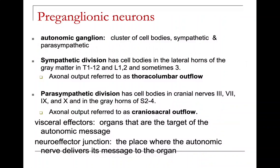Autonomic ganglia are clusters of cell bodies — both sympathetic and parasympathetic. The sympathetic division has cell bodies in the lateral horns of gray matter from T1 through L1, L2, and sometimes L3; this axonal output is called thoracolumbar flow. The parasympathetic division has cell bodies in cranial nerves 3, 7, 9, and 10, and in the gray horns of S2 through S4; this is called craniosacral flow. Visceral effectors are the target organs and the neural-effector junction is where the message is delivered.